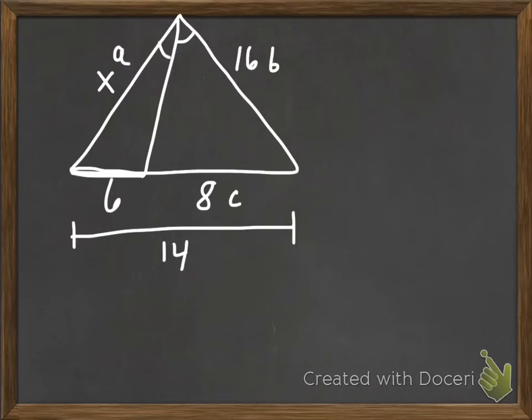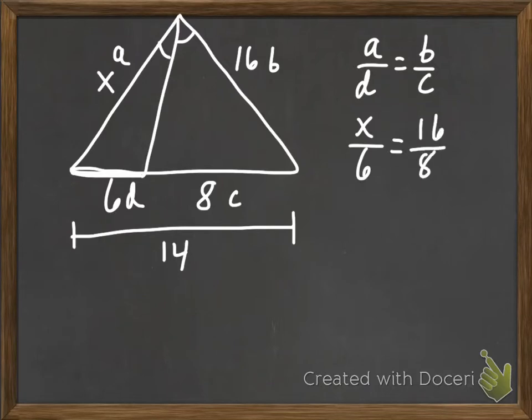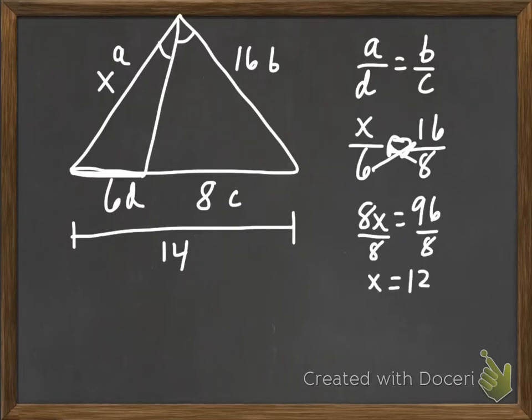I have A, B, C, and D. So I can do... Oops, I did that backwards, didn't I? C, D. I can do A over D equals B over C. So I can say that X over 6 equals 16 divided by 8. So now we're going to cross multiply. You may remember doing this back in junior high type math where we cross multiply to solve. So we're going to do 8 times X, which is 8X. And then 6 times 16, which is 96. And now we're going to divide that by 8. And we get 12. So X is 12.